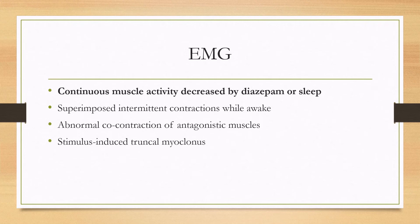On EMG, which is usually done for diagnosis, there is continuous muscle activity that is characteristically decreased by diazepam or by sleep. There are superimposed intermittent contractions while awake, and there can be abnormal co-contraction of antagonistic muscles causing pain. Stimulus-induced truncal myoclonus can also be seen.